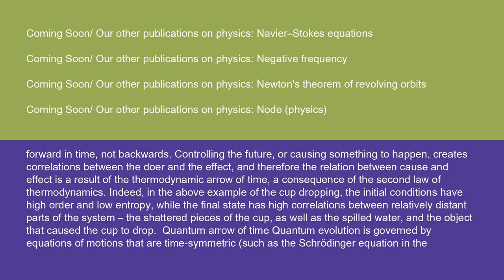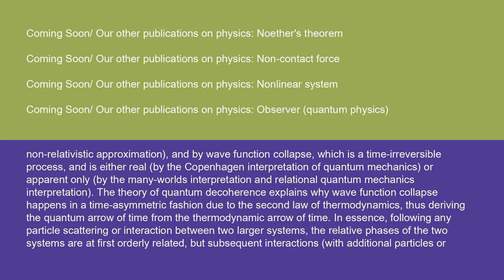Quantum evolution is governed by equations of motion that are time-symmetric, such as the Schrödinger equation in the non-relativistic approximation, and by wave function collapse, which is a time-irreversible process — either real by the Copenhagen interpretation of quantum mechanics, or apparent only by the many-worlds interpretation and relational quantum mechanics interpretation. The theory of quantum decoherence explains why wave function collapse happens in a time-asymmetric fashion due to the second law of thermodynamics, thus deriving the quantum arrow of time from the thermodynamic arrow of time.